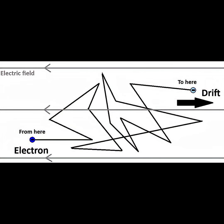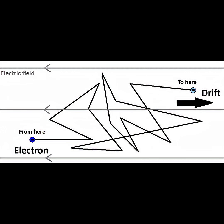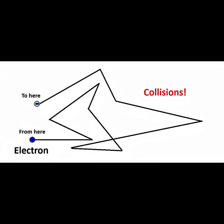In the presence of an electric field, despite the continual collisions and random redirections of the electron motion, the electrons will be nudged to drift a little bit in the direction opposite of the electric field. Thus, overall, there is a small electron drift in one direction as the electrons travel through the conductor. If there was no electric field, the electron movements would be totally random, not in any particular direction, so there would be no net current.